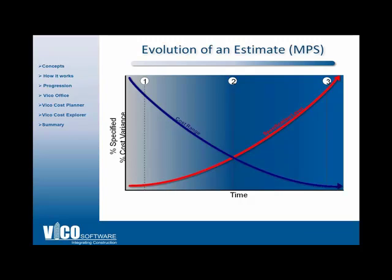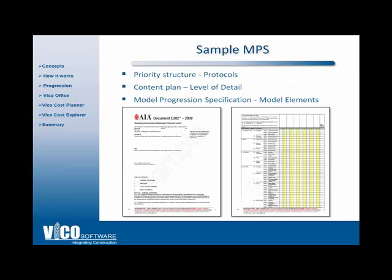The goal of VICO Office, VICO Cost Explorer, and VICO Cost Planner is to help you facilitate this process and implement model progression through what we call the Model Progression Specification. As mentioned earlier, this is the tool — the formula or spreadsheet — documented in the AIA E-202 document for defining the stages as you progress from a very schematic model to a more specific model during the course of construction. VICO initiated the development of the MPS document with WeBCore, and WeBCore refined the process through the AIA California Council. The document was released in December 2008 and describes the level of development and includes a sample model progression spec.